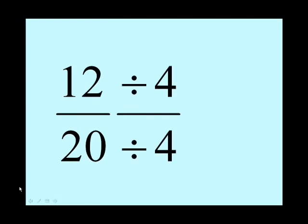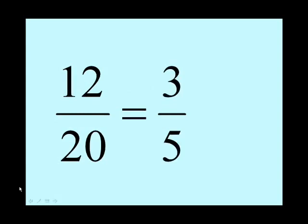There you go, the common factor 4. Some people might divide by 2, then divide by 2 again, that's okay, we'll come back to that later. So 12 divided by 4 is 3, and 20 divided by 4 is 5. So the fraction is equivalent to 3 fifths.